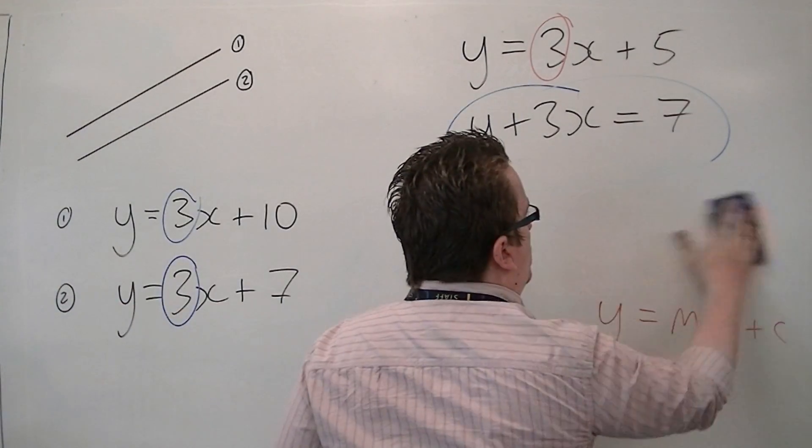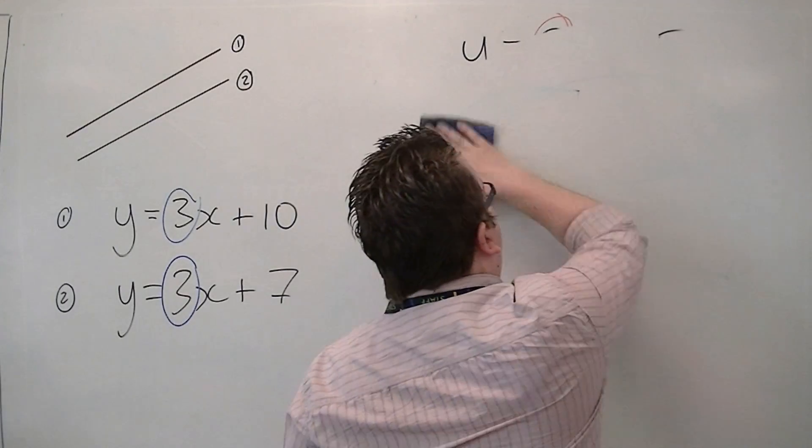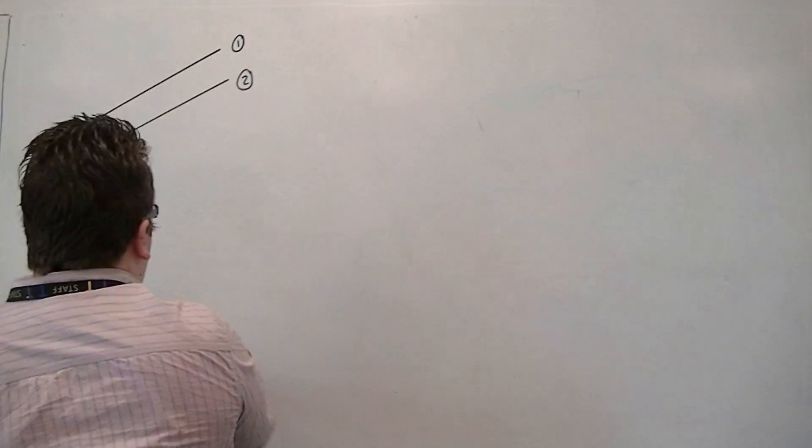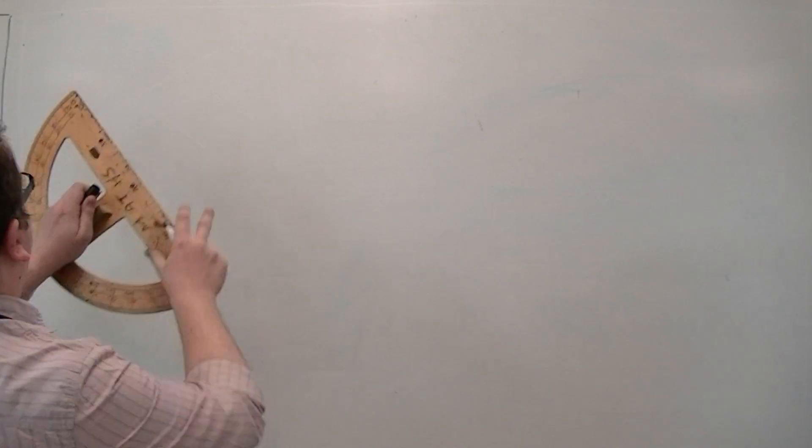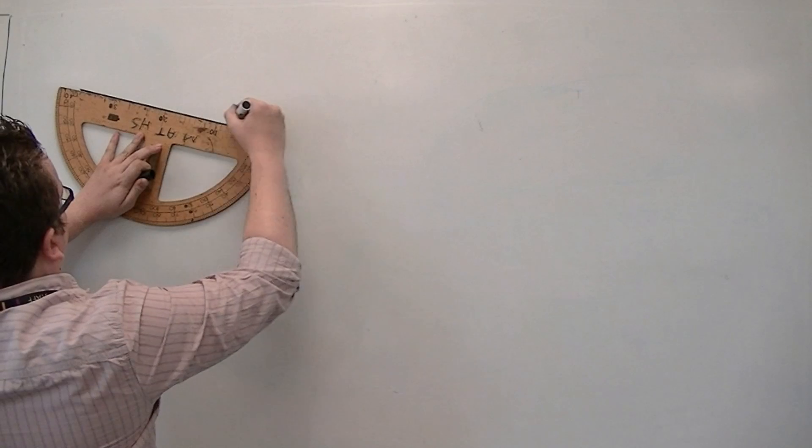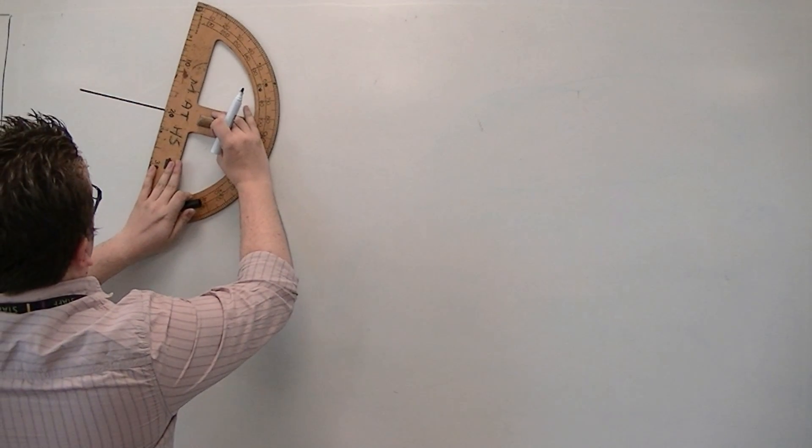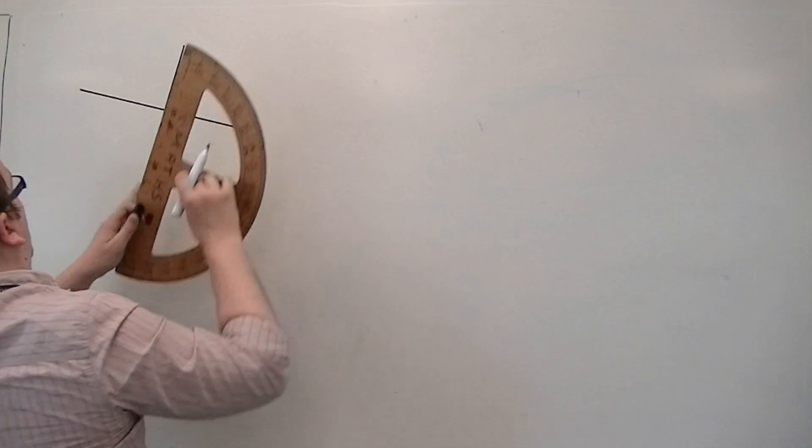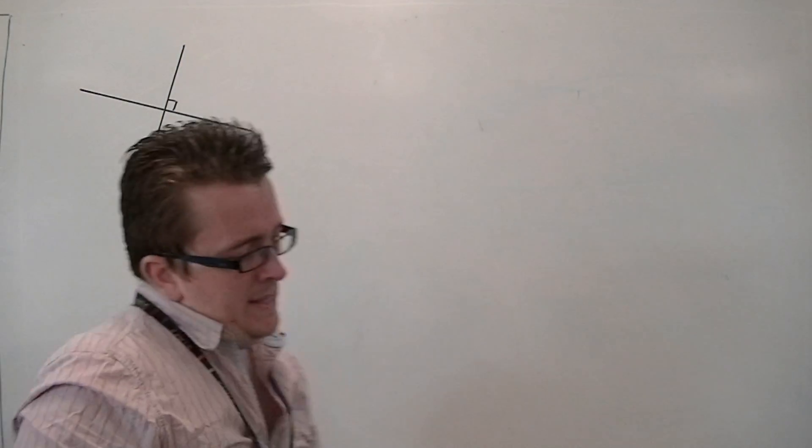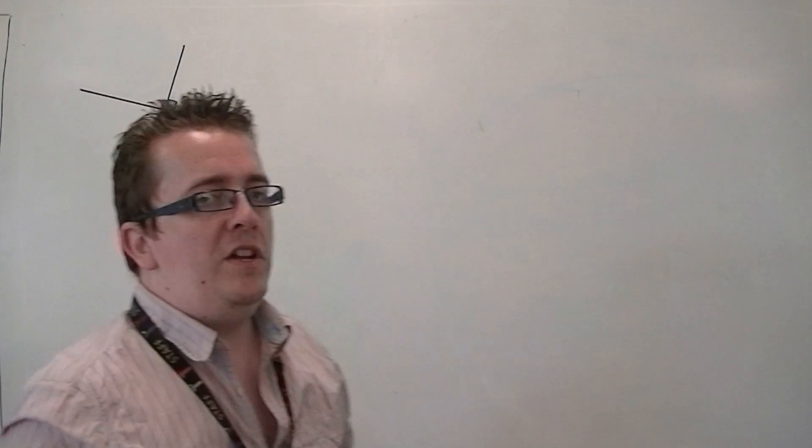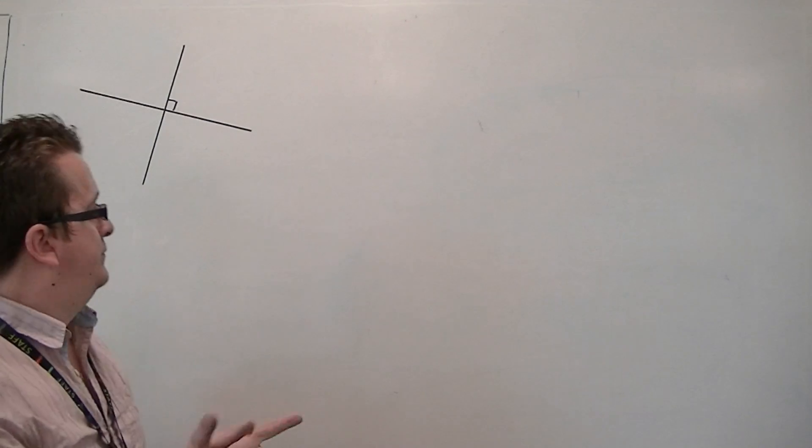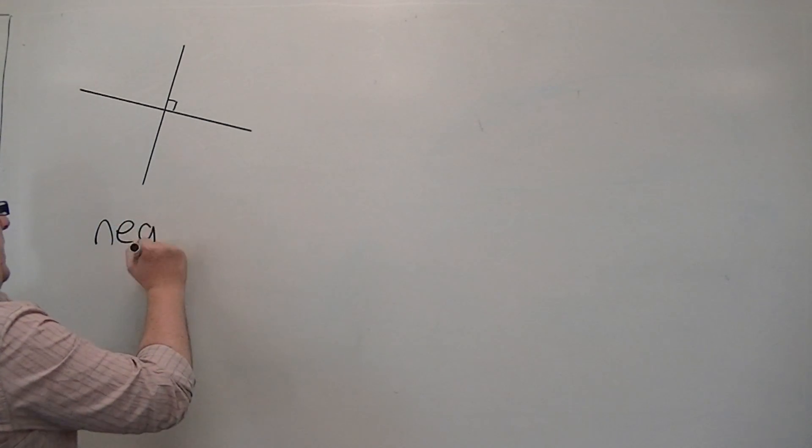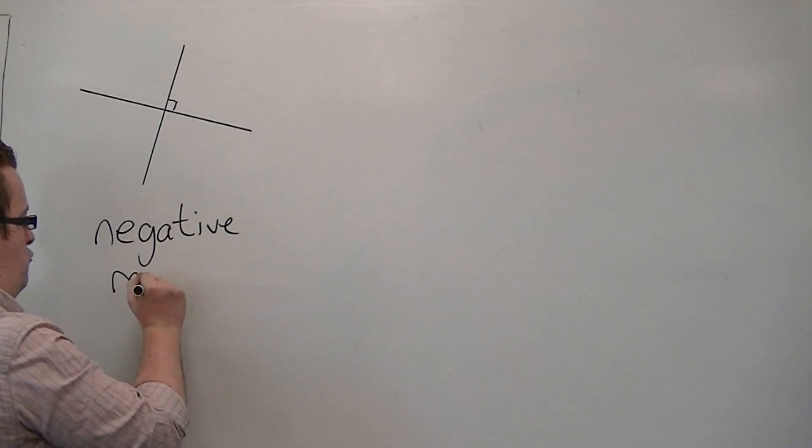The other version, or the other problem, is perpendicular lines. Now, perpendicular lines are the situation where you have two lines that intersect at a right angle. And I mentioned in the previous video that it has something to do with the gradients are the negative reciprocals of each other. So, key words here: negative reciprocal.